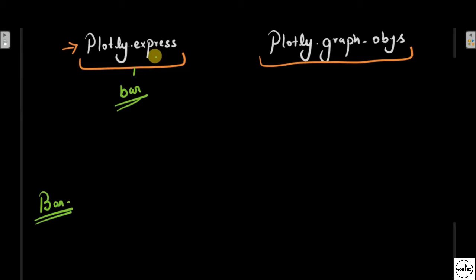Similarly, there is a function as go.bar. It means whatever chart you need, either you can use Plotly Express or Graph Objects. But let's understand what is the difference between both.